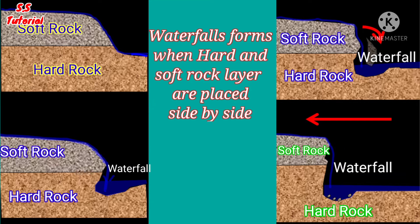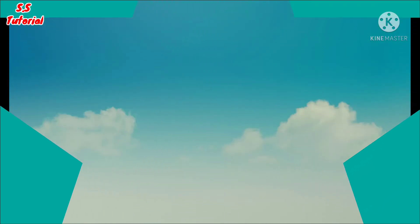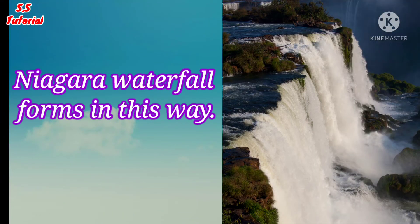When hard and soft rock layers are placed horizontally, vertically, or diagonally side by side in the course of the river, then the soft rock layer erodes quickly. A steep slope is formed, and water on that slope falls vertically, creating a waterfall. Most waterfalls form in this way. Niagara, the most beautiful waterfall in the world, has been created in this way.